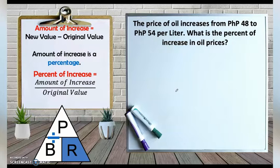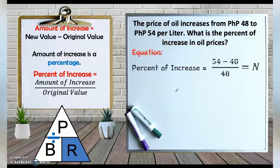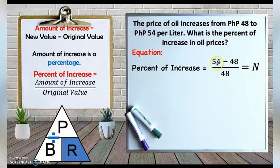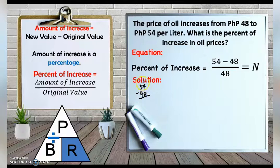Now let's answer the story problem using our formula. Percent of increase is equal to the amount of increase divided by the original value. The rate equals percentage divided by base. The original value of the oil price is 48, and the amount of increase is found by subtracting the new value from the original value. So our equation is 54 minus 48, divided by 48.